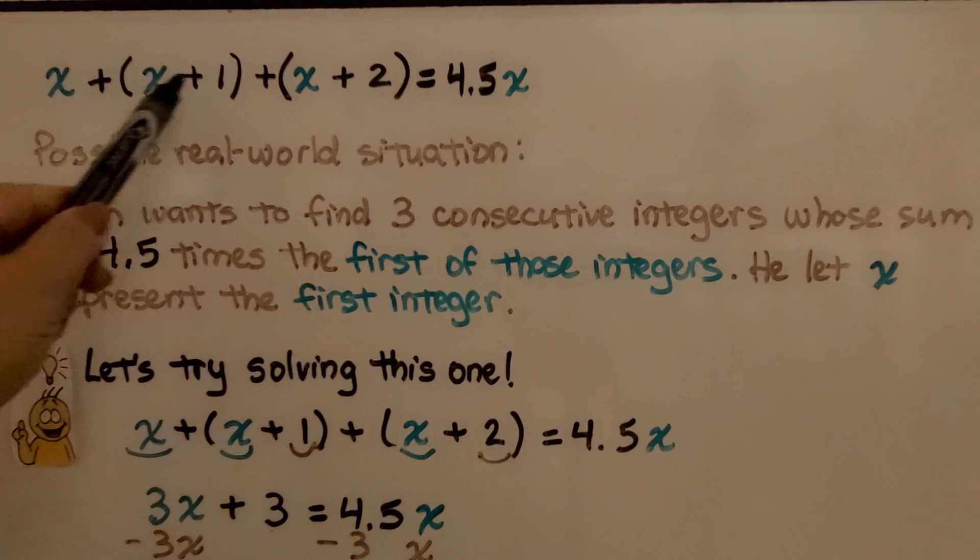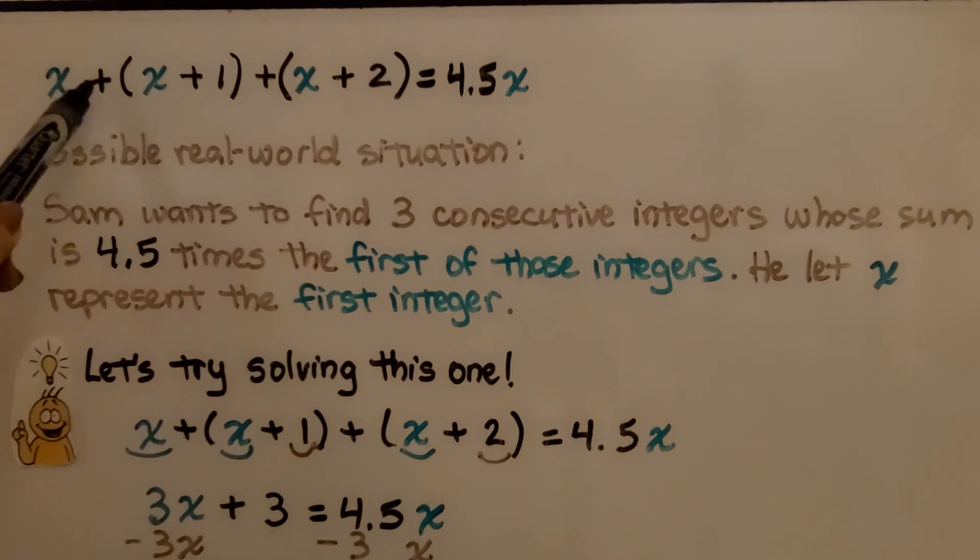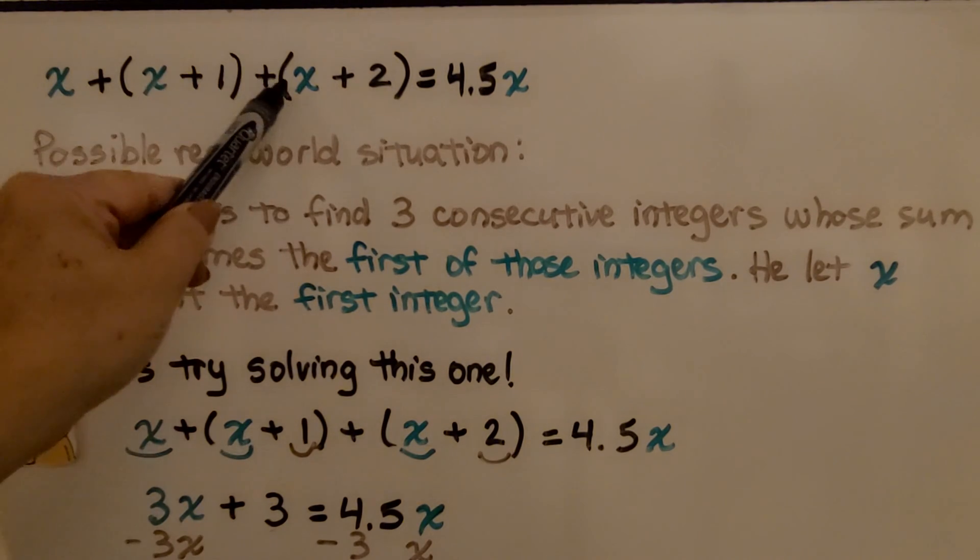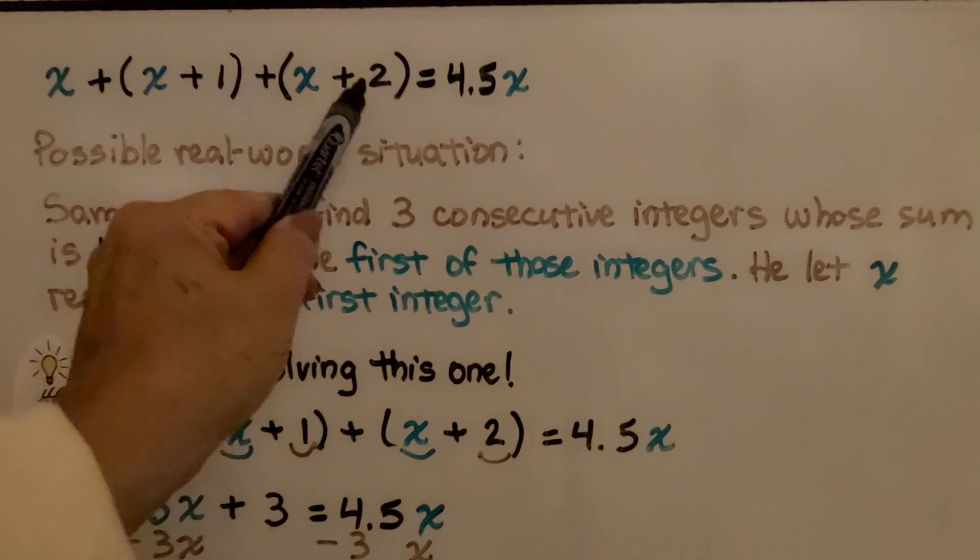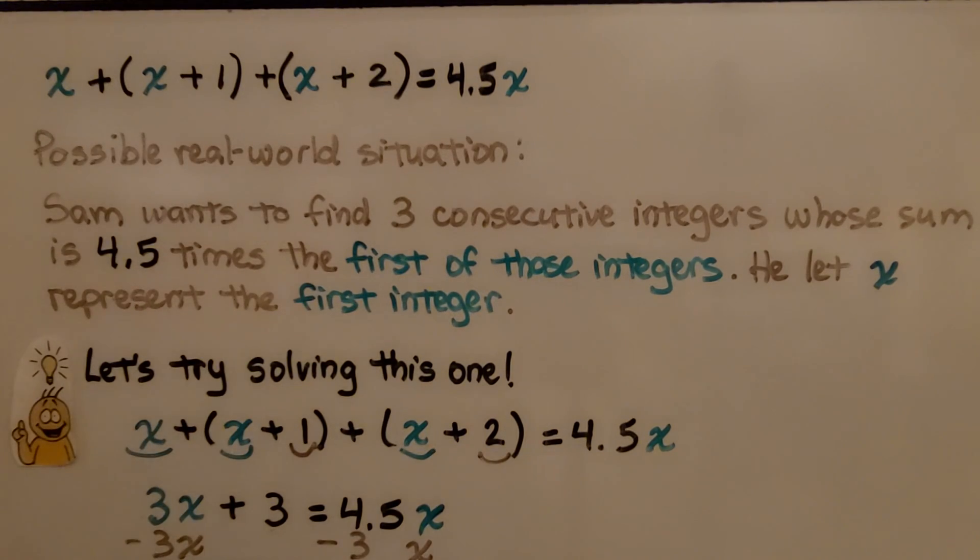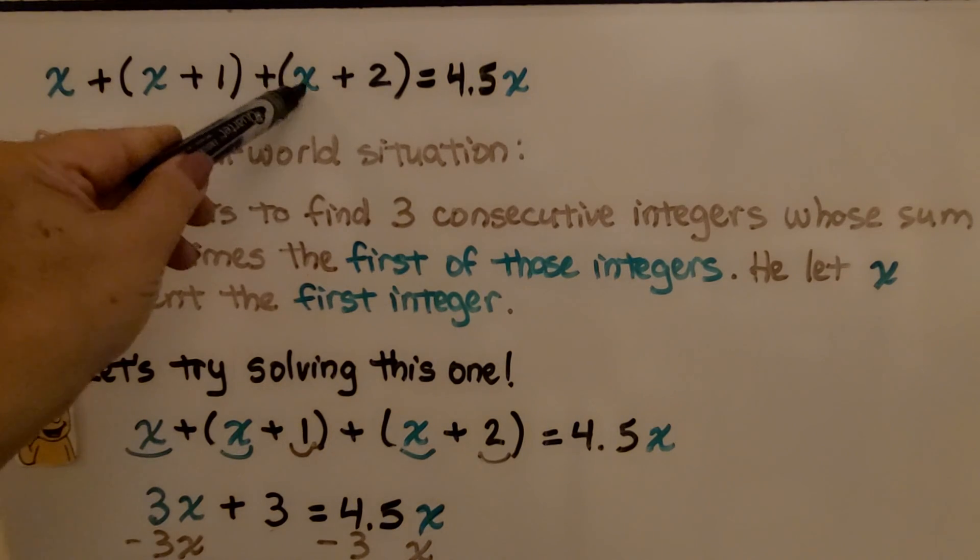So when you see an equation like this, x, then plus whatever x is plus 1, then whatever x is plus 2, this is an equation for consecutive numbers. It could be the pages in a book. It could be a page, and then the next page would be whatever that page is plus 1, and then the page after that would be whatever that page is plus 2.